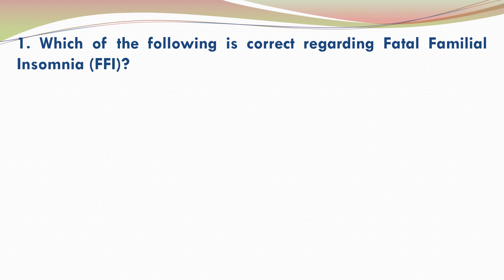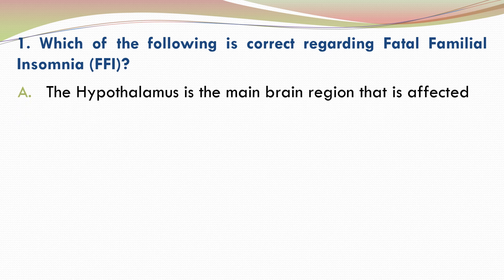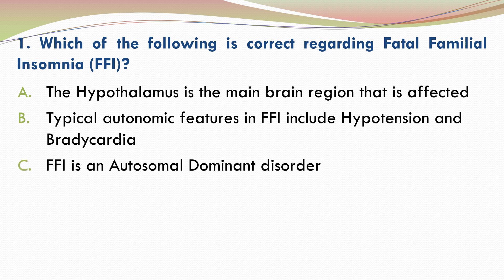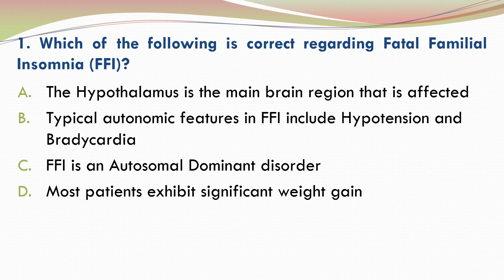Question 1. Which of the following is correct regarding fatal familial insomnia? There are 4 options. Please go through the options and make your selection. If you want, you can pause. The correct answer is 1.